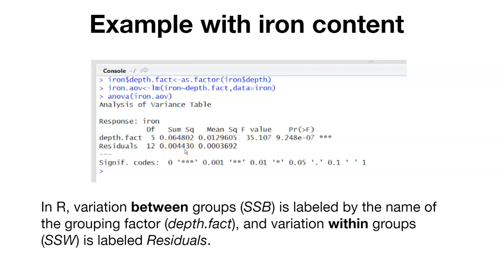The variation within groups, or the within-group sum of squares, is labeled residuals. We can calculate the F value. Already you should see that 35.107 is a pretty large value, so we're probably going to reject the null hypothesis. When we look at the p-value — if we were to do this test at 0.05 — the p-value is 9.248 times 10 to the negative 7th, an incredibly small p-value. In this case, we would reject the null hypothesis and conclude that at least one water depth in the iron level dataset is different from at least one other water depth.